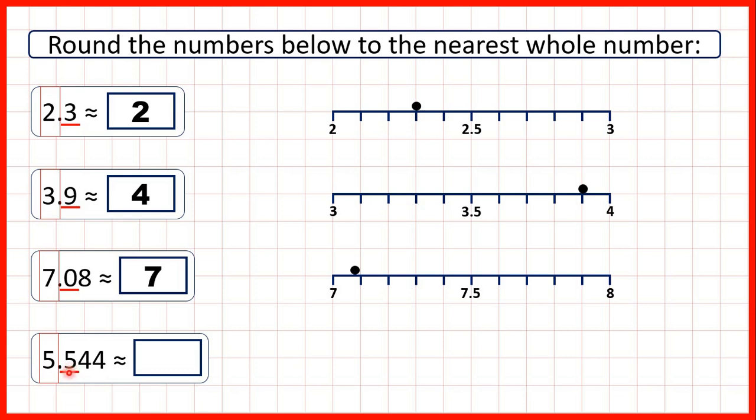Because we have 5 or more, we have 5 tenths, we know that we're rounding up. So 5.544 rounds to 6.